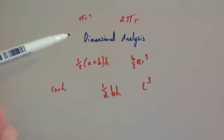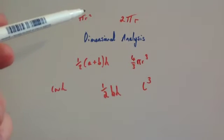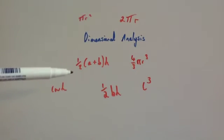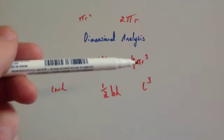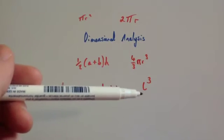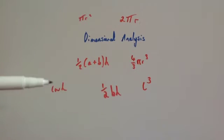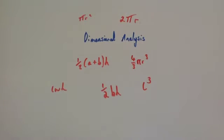In this video we're going to look at the topic Dimensional Analysis. I've written some famous formulas on the page here: pi r squared, the area of a circle; 2 pi r, the circumference of a circle; a half a plus b h, the area of a trapezium; 4 thirds pi r cubed, the volume of a sphere; l cubed, the volume of a cube; a half b h, the area of a triangle; and l w h, the volume of a cuboid. Because we know what these formulas are, we know automatically whether they're going to be an area, a volume, a perimeter, or a length, and we don't need to analyze the dimensions.